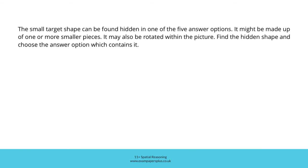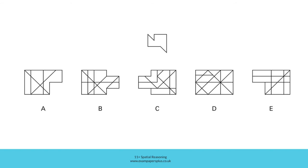Now you can try a second similar question. Remember, the small target shape can be found hidden in one of the five answer options. It might be made up of one or more smaller pieces, and it may also be rotated within the picture. Find the hidden shape and choose the answer option which contains it. Pause the video and have a go — you should aim to select your answer within 30 seconds. When you have chosen an answer, press play and we'll go over it together.